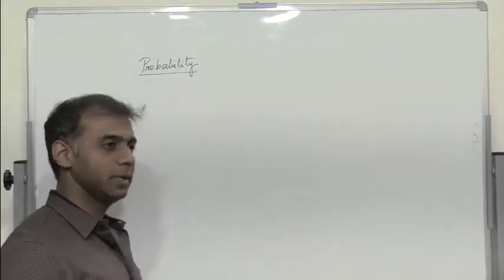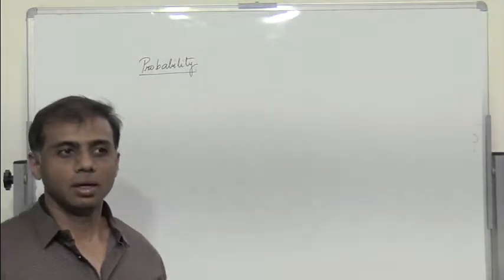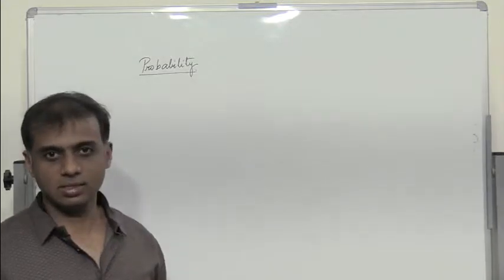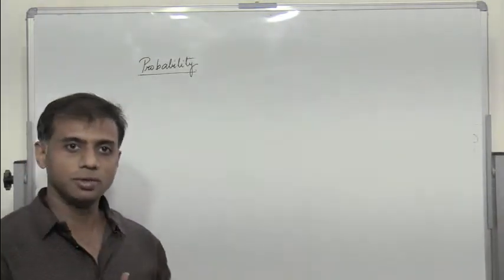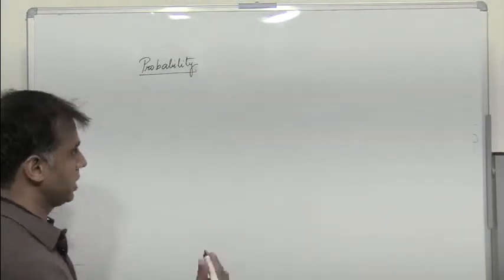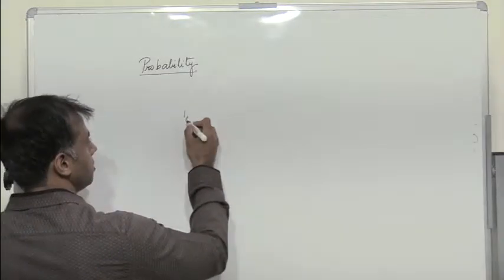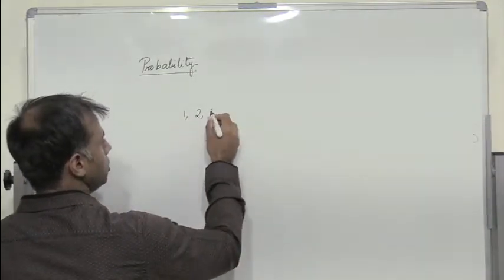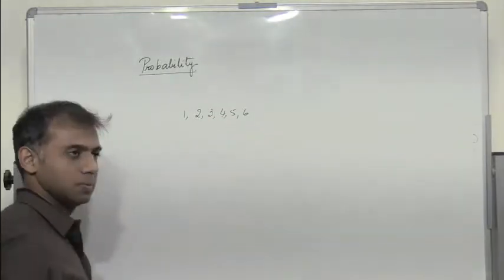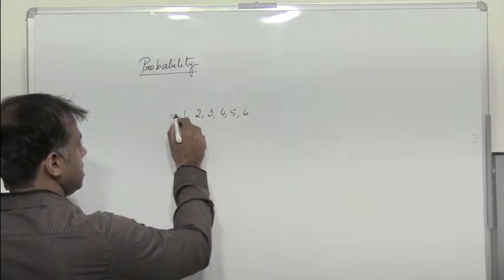So how do we define probability in general? Let us assume that I have a die. A die has six sides: one, two, three, four, five, six. So what are all the possible outcomes of a die? If I throw a die, I can either get one, two, three, four, five, or six. So all the possible outcomes of the die is six.